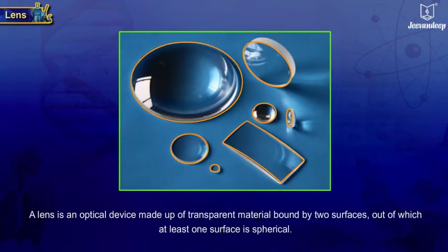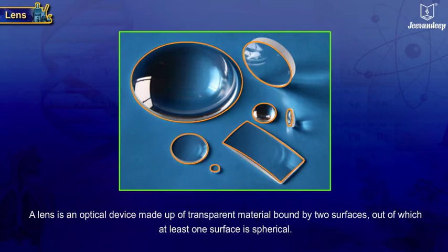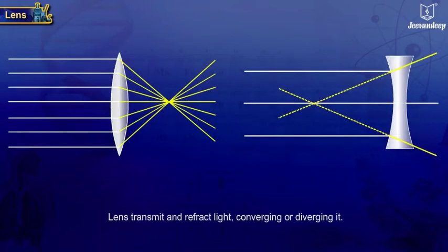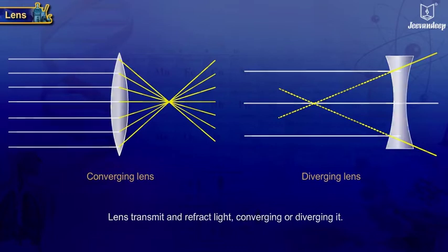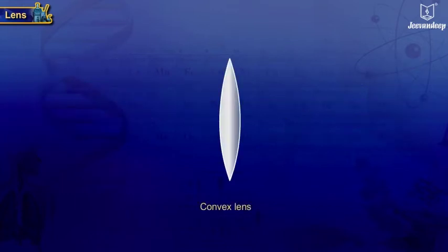A lens is an optical device made up of transparent material bound by two surfaces, out of which at least one surface is spherical. It transmits and refracts light, converging or diverging it.